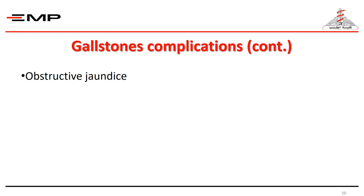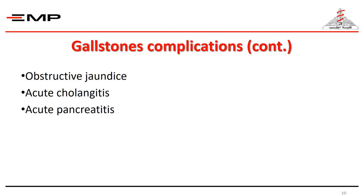Another important complication is acute cholangitis. The presence of a foreign body like a stone in the CBD predisposes to acute cholangitis. Bile in the biliary tree becomes infected and unless urgently drained, toxemia and septicemia shall follow with septic shock and high risk of mortality. Acute pancreatitis might also occur; the CBD stone precipitates acute pancreatitis. Although the exact mechanism is ill-defined, one theory is the obstruction of the pancreatic duct by a stone in the common channel or reflux of bile into the pancreatic duct. ERCP sphincterotomy with CBD stone clearance might improve the condition.